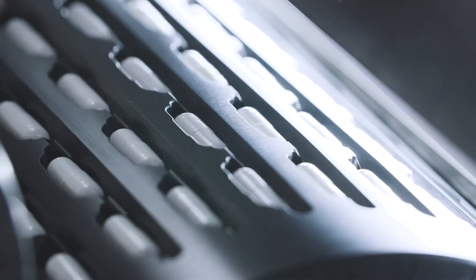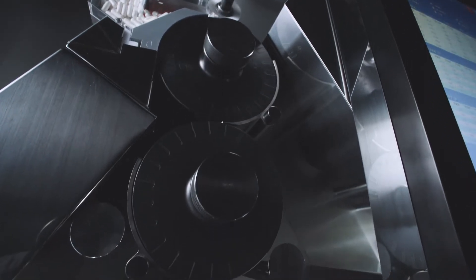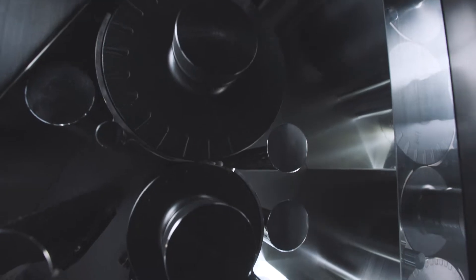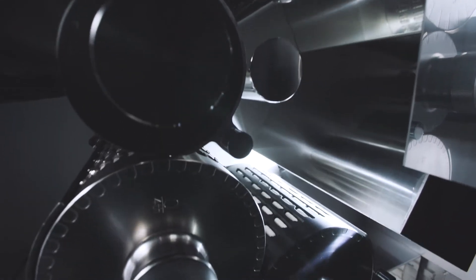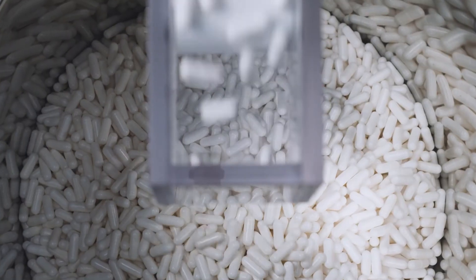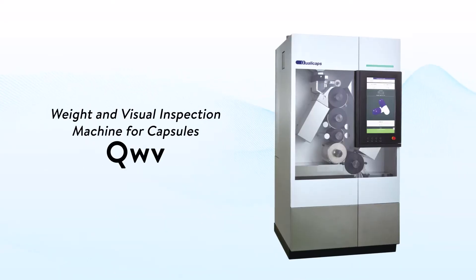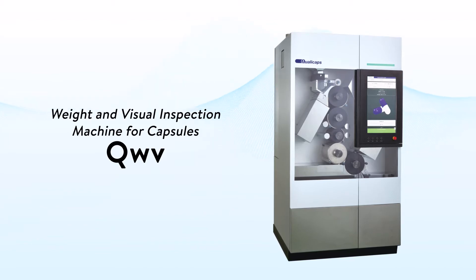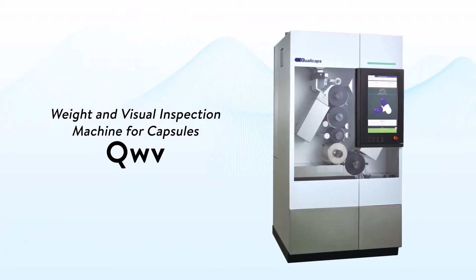The inspection process is faster and more streamlined. QualiCaps has developed a capsule inspection machine that can simultaneously perform an omnidirectional visual inspection and a highly accurate weight inspection within a single unit. Introducing the Weight and Visual Inspection Machine for Capsules, CUVE.